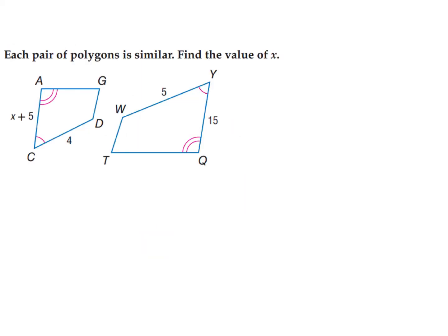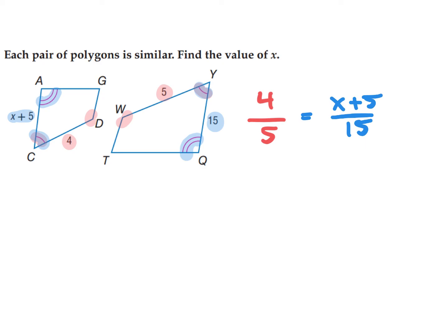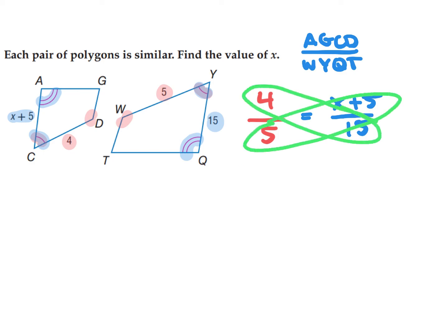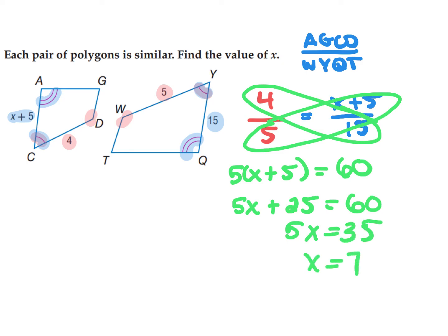We can do the same thing in this example. Matching up sides: the side of length 4 is between one marking and no marking, and the corresponding side is 5, so I have 4 over 5. Then the side of length X plus 5 is between markings 2 and 1, and the corresponding side is 15. So I set up 4 over 5 equals X plus 5 over 15. Cross multiplying: 5 times (X plus 5) equals 60, giving 5X plus 25 equals 60, then 5X equals 35, so X equals 7.